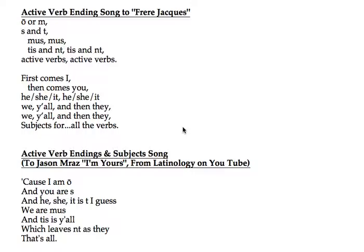This goes to Jason Mraz's 'I'm Yours': 'Cause I am O and you are S, and he/she/it is T. I guess we are mus, and tis is y'all, which leaves in T as they. That's all.